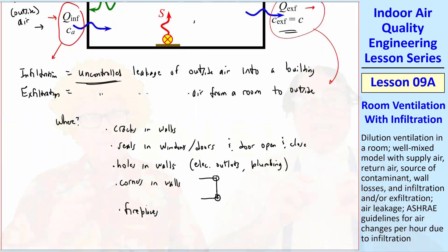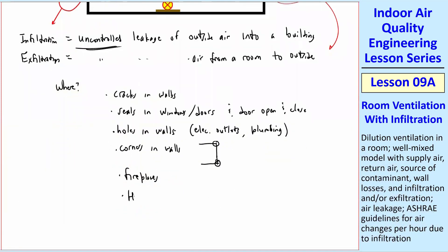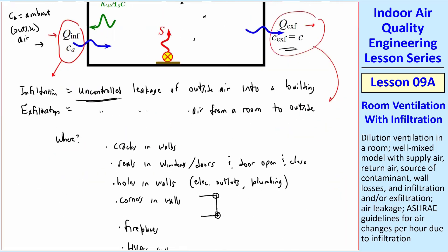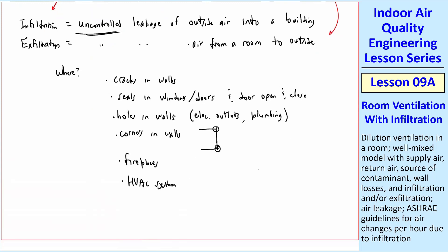Fireplaces, etc. The HVAC system itself, the ducts that bring this supply air in and take the return air out, they cut a hole in the wall or in the ceiling to do that. And there's some leakage around that. So there's all kinds of places where there can be infiltration and exfiltration.